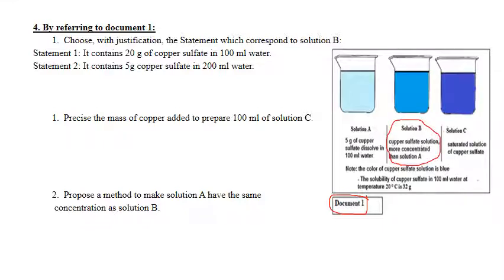Choose the statement which corresponds to solution B. This is solution B. It contains 20 grams of copper sulfate in 100 milliliters water, or it contains 5 grams of copper sulfate in 200 milliliters water. To know which is correct, look at solution B.